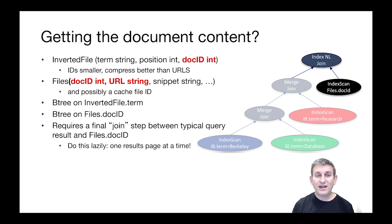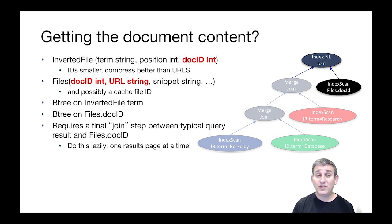In the files table we'll have an integer doc ID as an identifier, and then we'll have the idea of the thing that can actually let us find the document — say a URL or a file path. We may also want to cache these things in memory to make it go faster. And then we'll have a B-tree as we did before on inverted file dot term, and a B-tree on files dot doc ID because we're going to do a lot of queries on that.